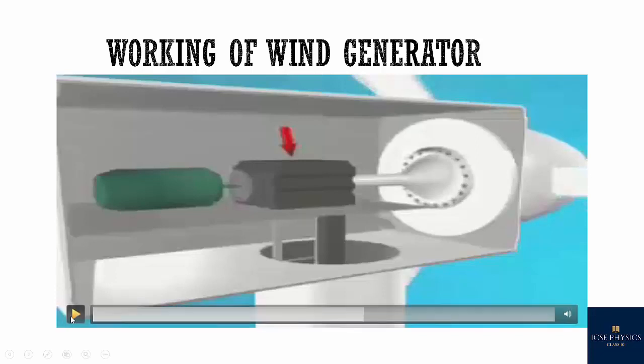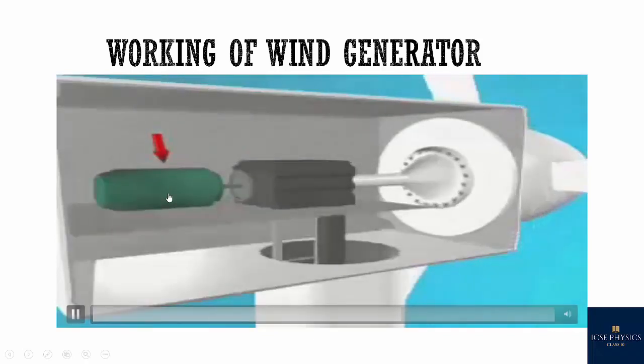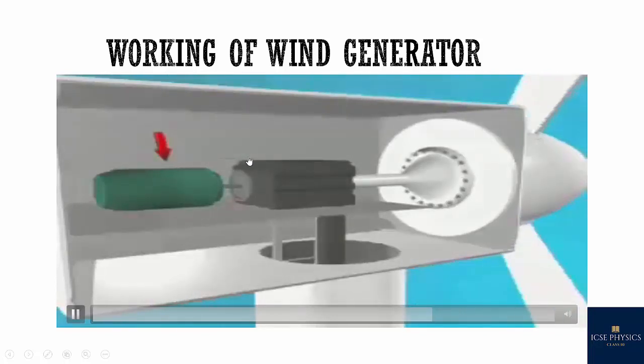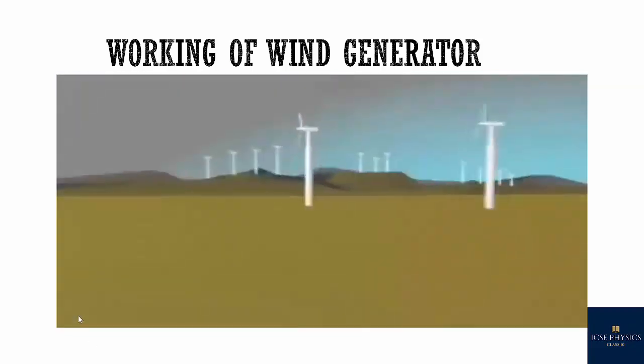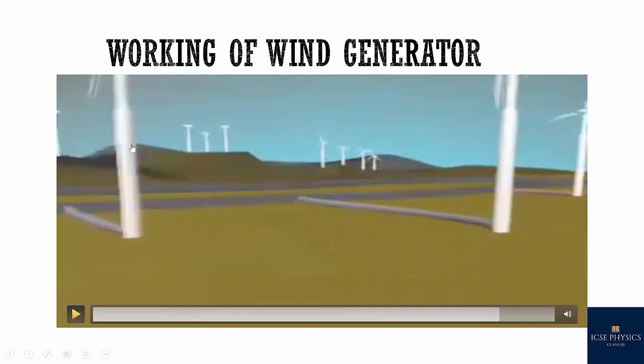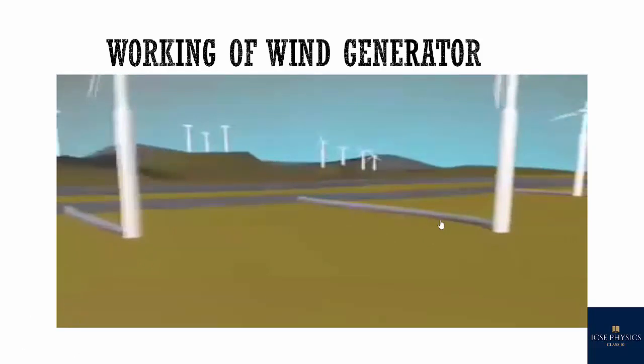The electric power generated by a single windmill is very small. So with the wind turbine, we also attach a small step up transformer to increase the voltage of the generating EMF. Now the electricity generated travels through the pole and then through the underground cables. To generate a sufficient amount of electric power, a large number of such wind generators are arranged over a big area called wind farm.